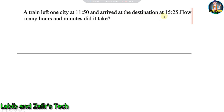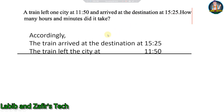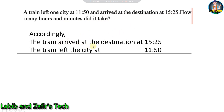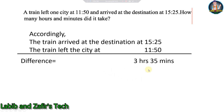Next problem: A train left one city at 11:50 and arrived at the destination at 15:25. How many hours and minutes did the journey take? Solution: 15:25 − 11:50 = 3 hours 35 minutes. The train took 3 hours and 35 minutes to travel.